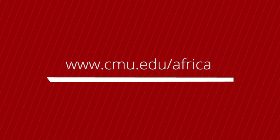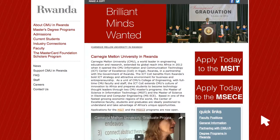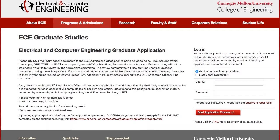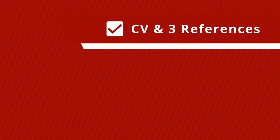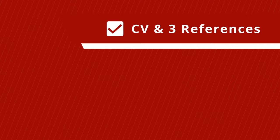You apply to the program on the CMU ECE website — see the link for more information. Once you have filled in your basic information, you will be asked to upload a couple of documents. First, your CV and three references that will support your application. Be sure your references can comment on you as a future graduate student.